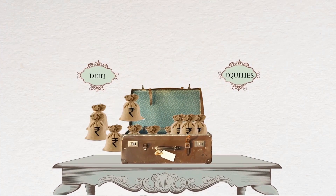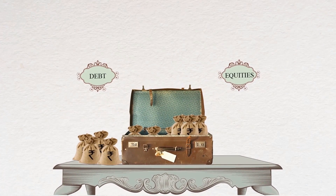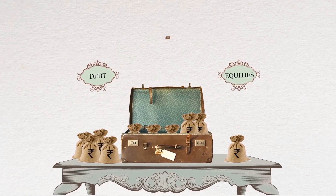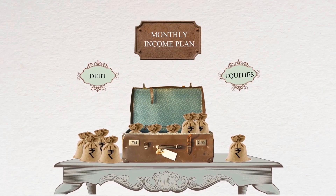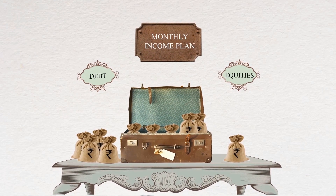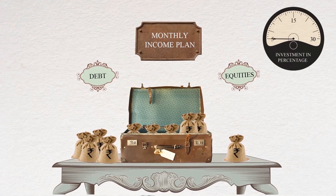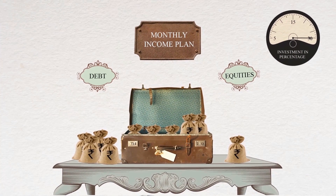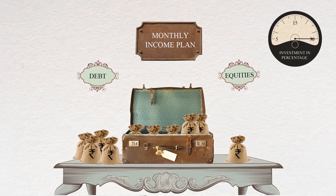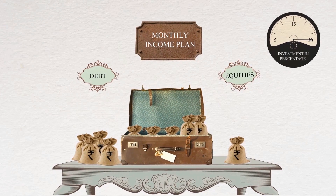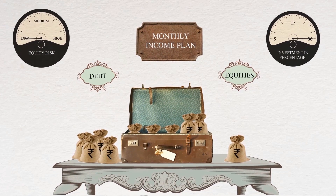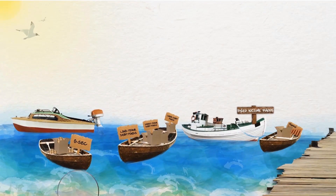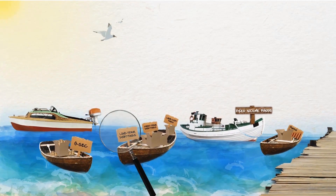Other than pure fixed income funds, there are also fixed income oriented funds that predominantly invest in debt yet have a small portion invested in equities. These are popularly called MIPs, or monthly income plans, and would invest anywhere ranging between 5 to 30% in equities based on the level of equity risk the fund endeavors to take.